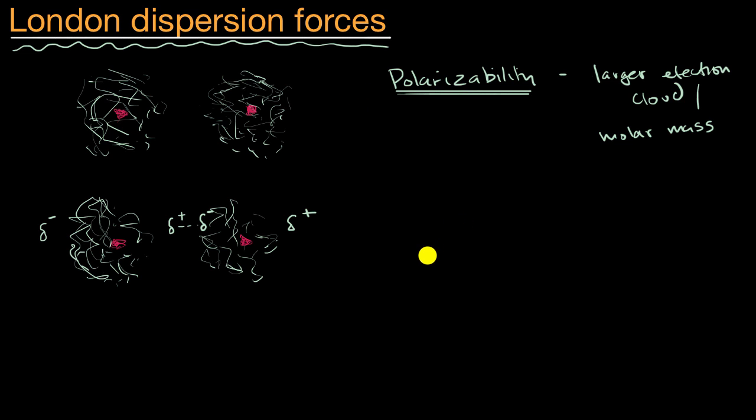For example, butane can come in two different forms. It can come in what's known as n-butane, which looks like this. So you have four carbons and 10 hydrogens. This is known as n-butane.